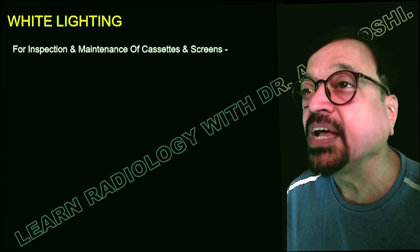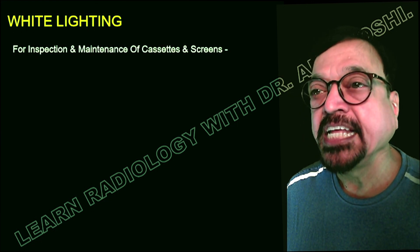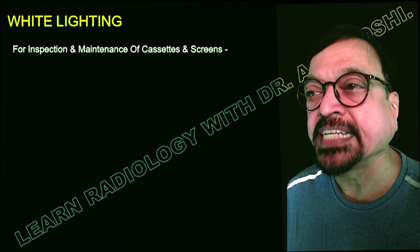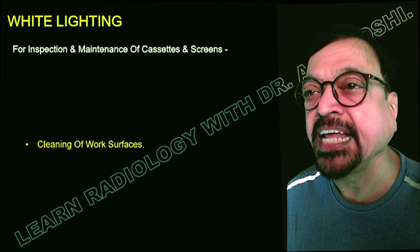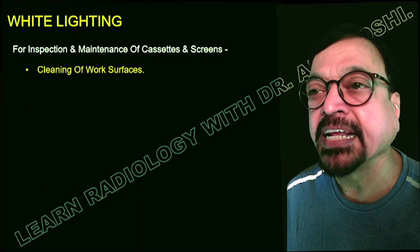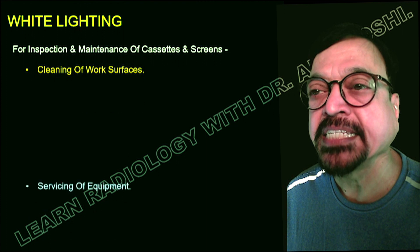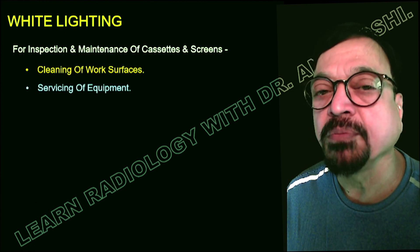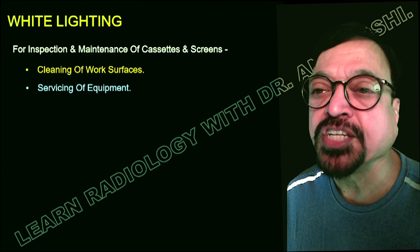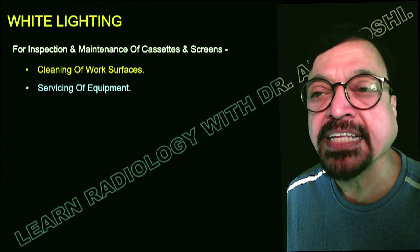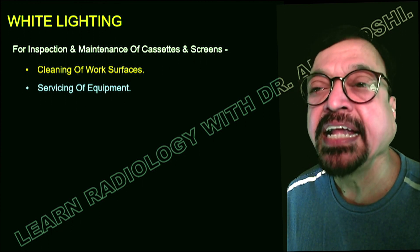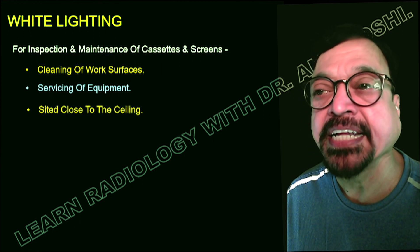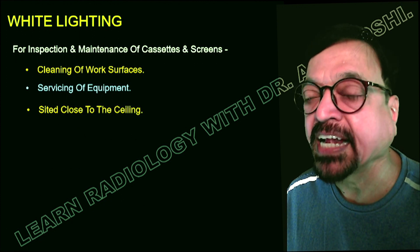Now, what does a white light do? It is for inspection and maintenance of the cassette, screen, and dark room — then cleaning workspaces and servicing of the equipment. The equipment here were tanks, hangers, and safe light. These need to be maintained and for that we need a white light.